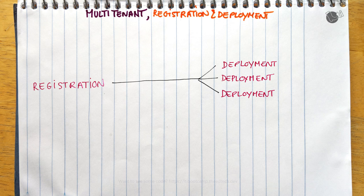This means that you can register a tool once, and then that tool can be deployed any number of times. Each deployment is what we would refer to as a tenant — usually an organization that decides to make the tool available to its users. In short, we have one registration, multiple deployments. That's what is meant here by multi-tenant.